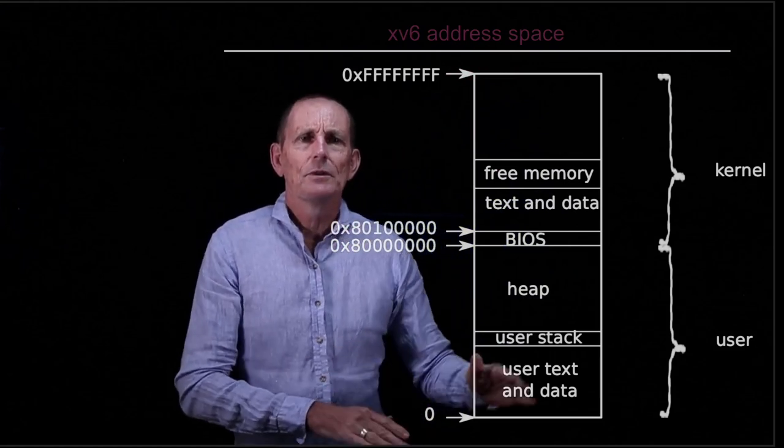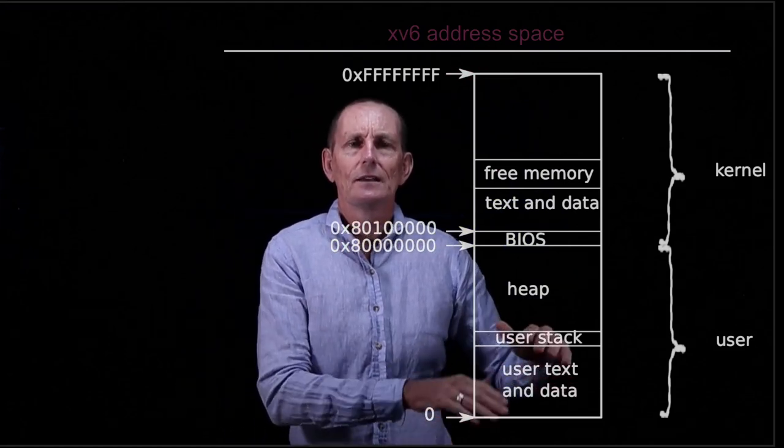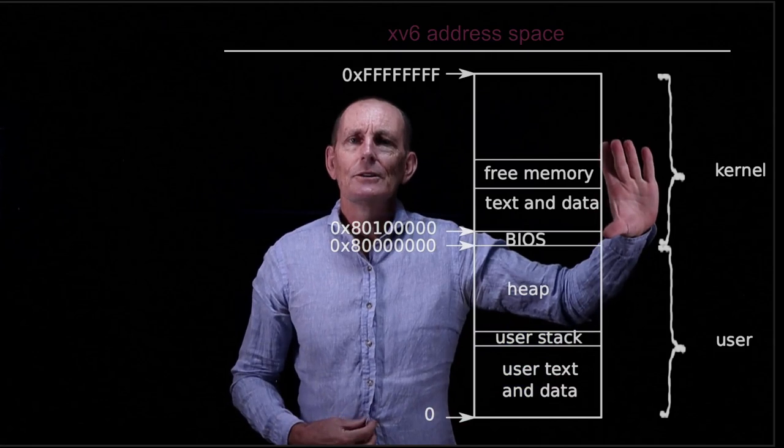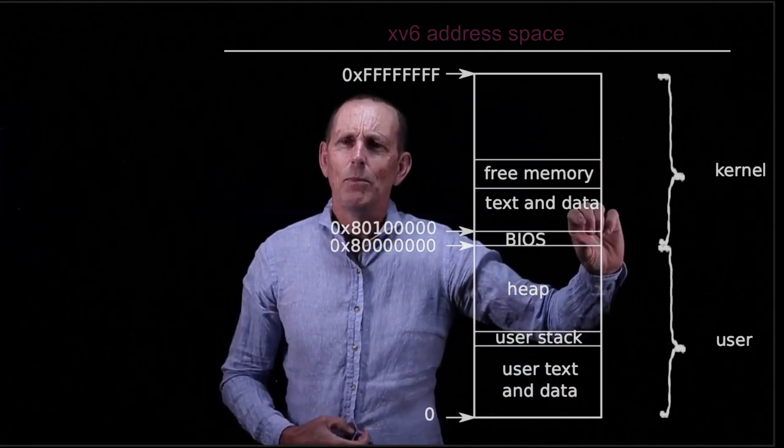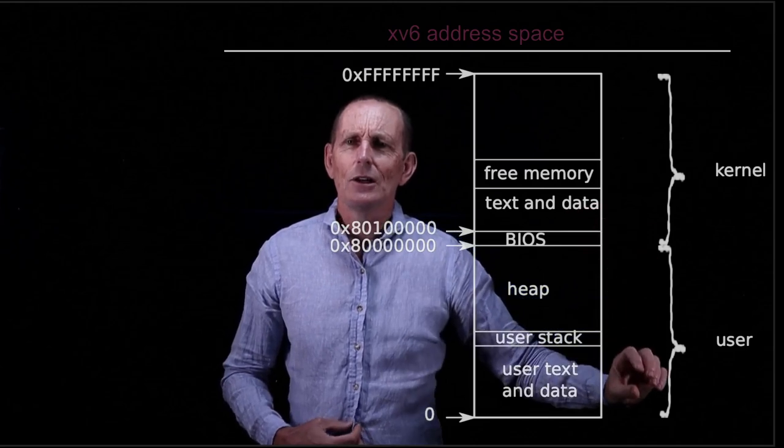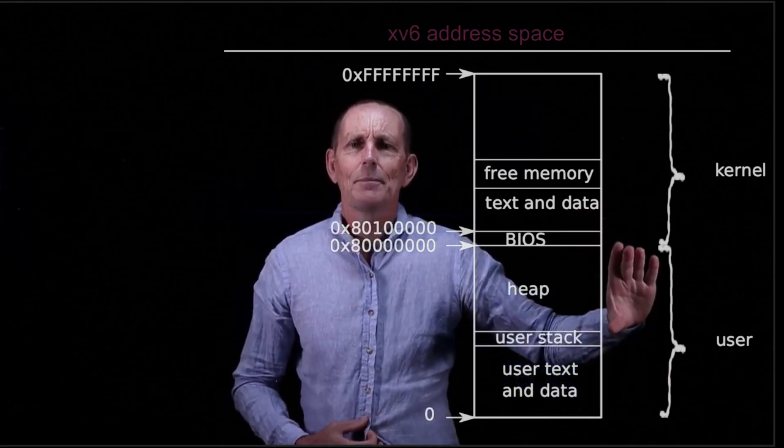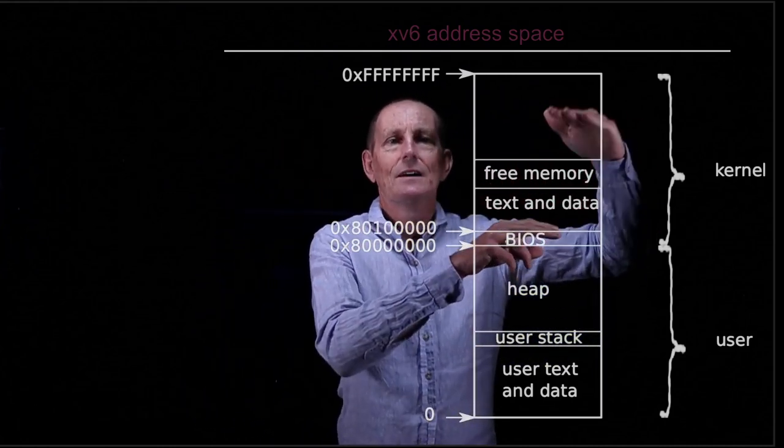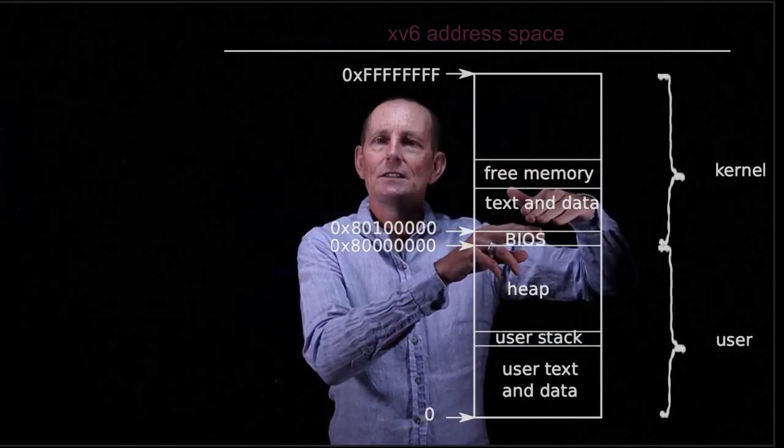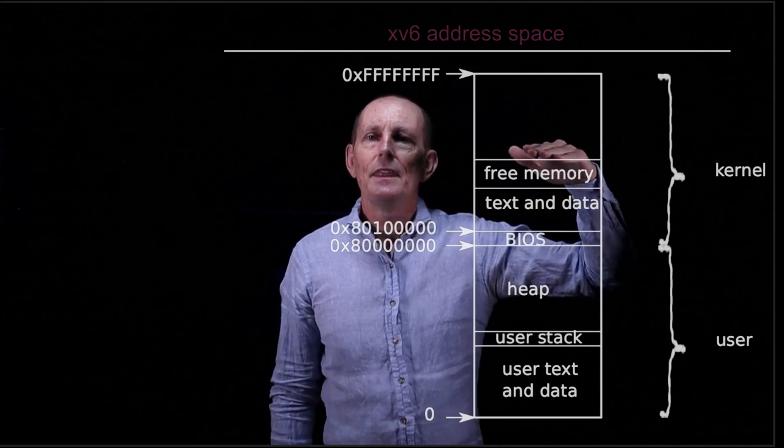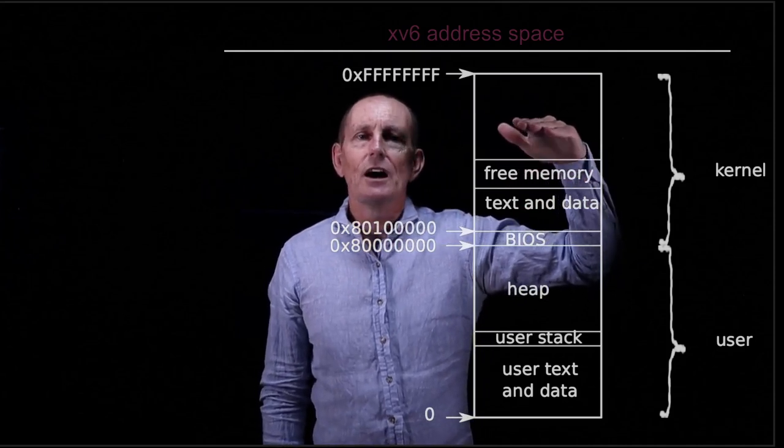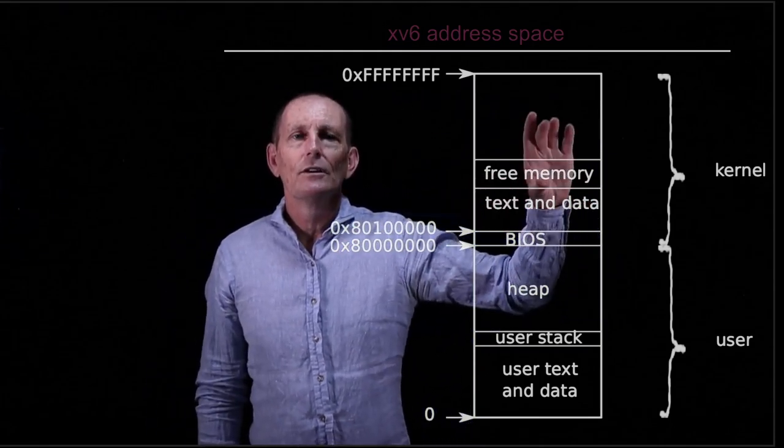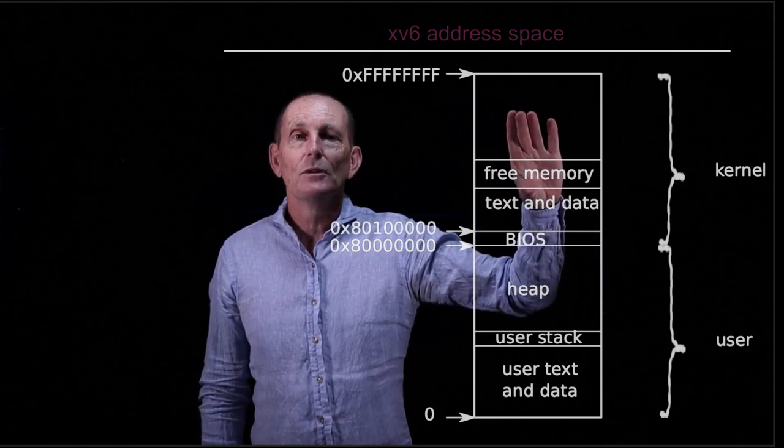And what do we have in the user mode? The standard stuff. We have our user text and data at the beginning. We have the stack and then we have a heap above that. The kernel mode includes the BIOS. The BIOS was actually down at a low level in memory. What's up with that? What's actually happening, as we'll see in a moment, is that the physical memory is actually remapped starting at 0x80000000, at the base of the kernel. So that comes up. And then what happens is we've got the code and the data for the kernel along with then free memory. These are just the free physical pages.